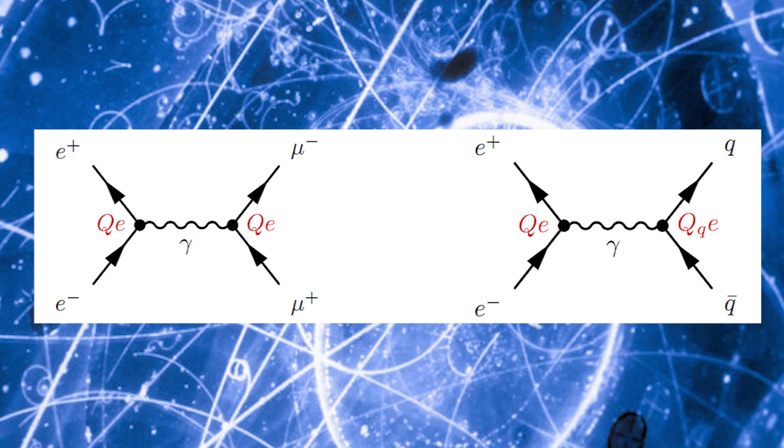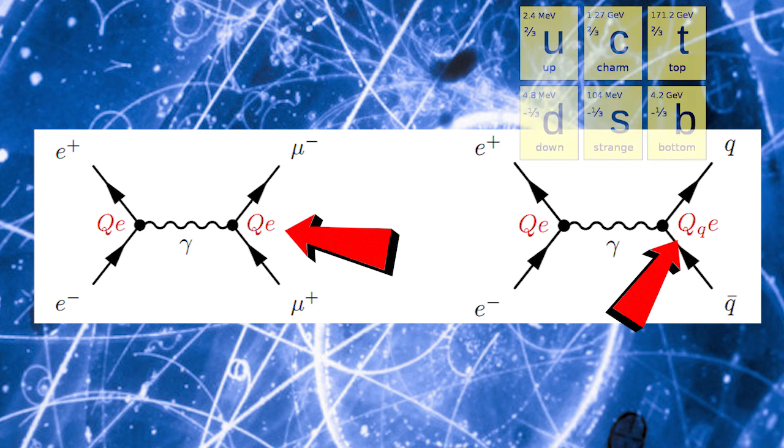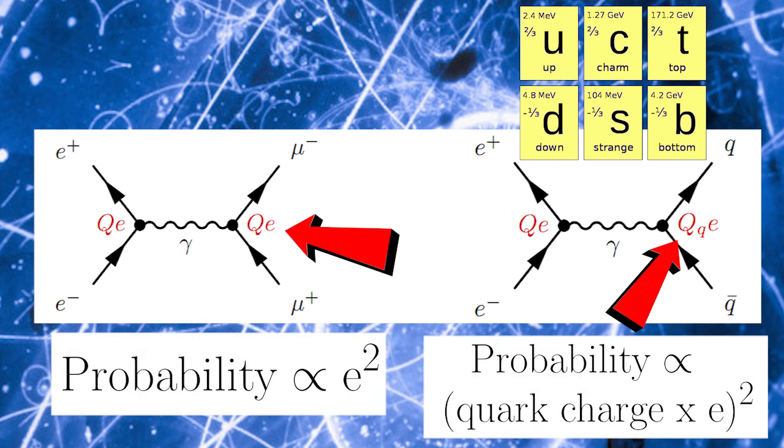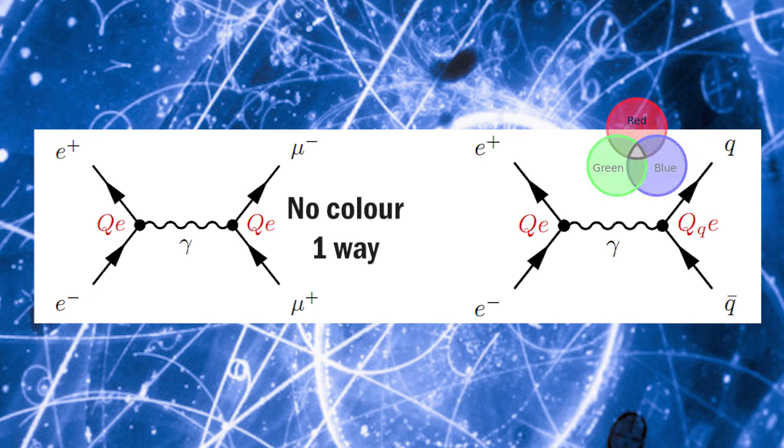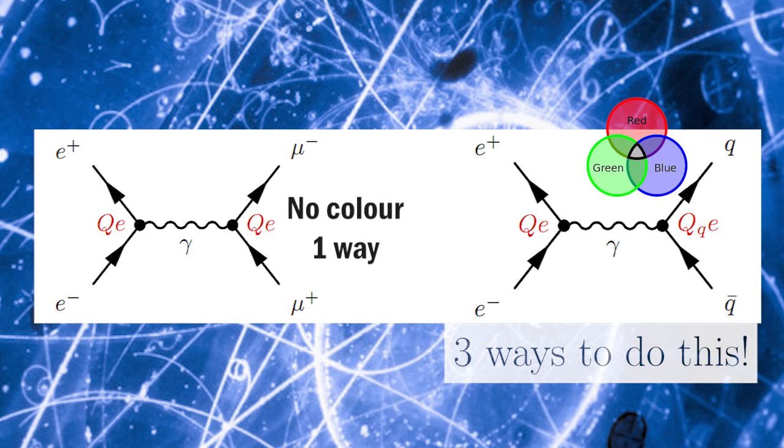If we neglect the mass of the final state muons or quarks, an approximation that's very reasonable at high energy, the only theoretical differences between these processes are: one, the charges of the final state particles. Muons and anti-muons have a charge magnitude of one, whereas quarks have fractional charges, plus two-thirds for up, charm, and top quarks, and minus one-third for down, strange, and bottom quarks. The larger the magnitude of the charge of a particle, the stronger the photon couples to it, and the more likely that end state is to be produced. And two, quarks and anti-quarks have three colors, while muons and anti-muons have only one. Muon and anti-muon pairs do not have color, and can only be produced in one way. However, quarks and anti-quarks come in three colors, and hence the photon is three times as likely to produce a quark-anti-quark pair than a muon-anti-muon pair.